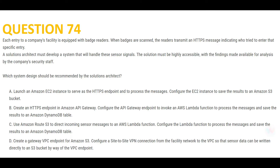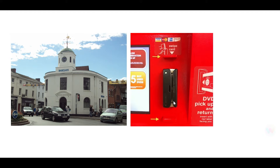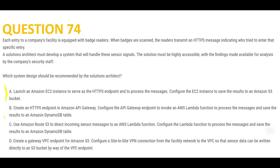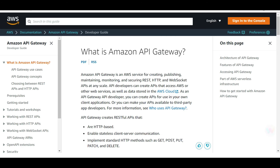Now let's look at this question. Suppose you are working for a company — say Barclays, just as an example. Most corporates have an access machine at their entrance: you swipe your ID card, which is also your access card, and get intermittent access to the facility. In this question, a similar scenario is happening. Data is sent in the form of HTTPS messages, and you need to place something here to take this data and process it. Now there are four options, but I'll give you a thumb rule: whenever you see the word HTTPS, think of API Gateway.